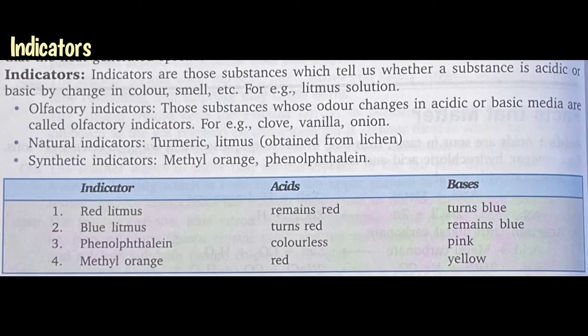Now let us study about indicators. What are indicators? Indicators are substances which tell us whether a substance is acidic or basic by change in color, smell, etc. If a substance is given to us and we don't know whether it is an acid or a base, then with the help of an indicator we can find it — either there will be a change in color or change in smell or some other change, with the help of which we can identify it. An example of an indicator is litmus solution.